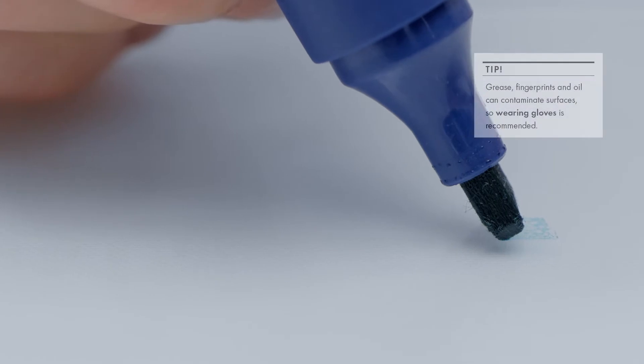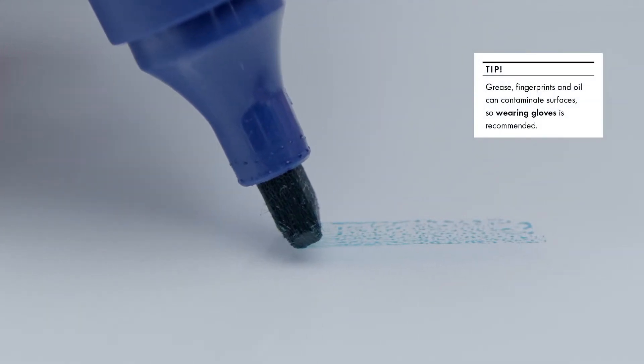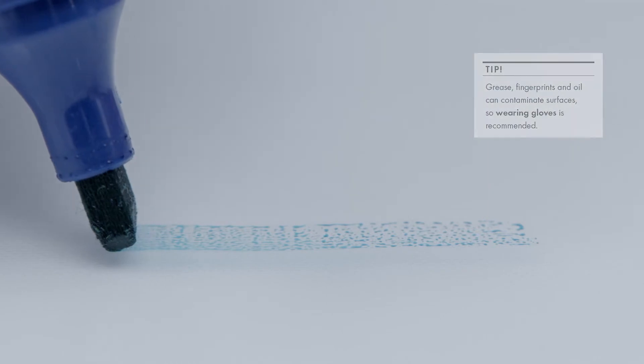If the ink disappears or forms bubbles, it means that the surface is either not ready or it is unsuitable for gluing or serolune applications.